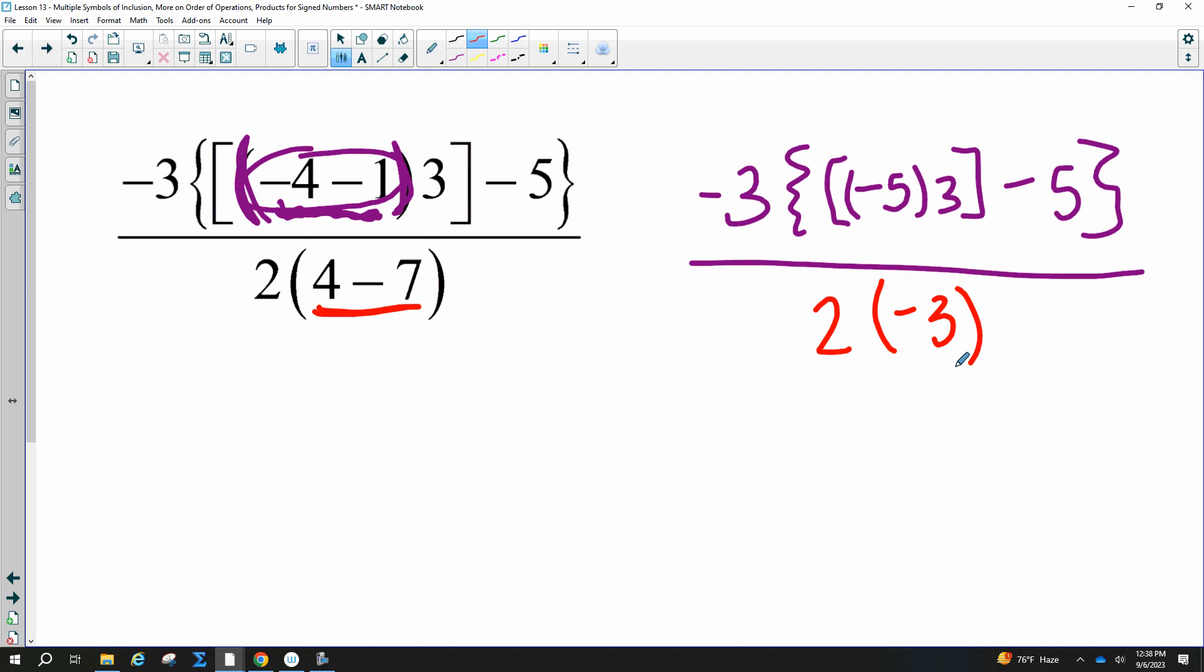Alright, now parentheses are super important, or you might accidentally add or subtract. So right here, I need to multiply next. So now I'm going to work inside these brackets, and that means I'm going to multiply. So I have negative 3, squiggly bracket, and then I have negative 5 times 3, which is negative 15. You can get rid of the brackets now. Is this negative 5 multiplying or subtracting, you guys? It is subtracting. Very good. It is not multiplying. It would have to have parentheses. And in the denominator, I can go ahead and multiply those to get negative 6.